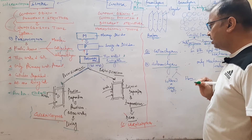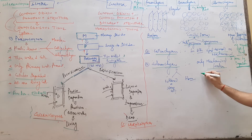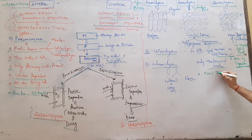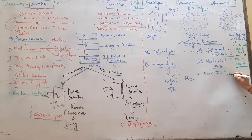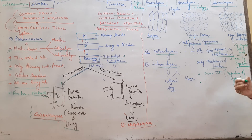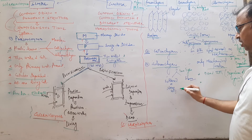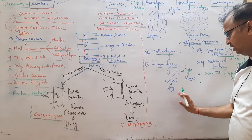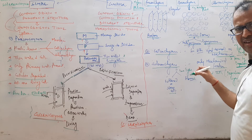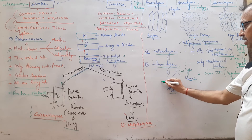Sclerenchyma has only mechanical function. All cells are dead cells due to the deposition of lignin. Sclerenchyma is further divided into two types: first is sclereids, which are hard stone cells, and second is fibers, which are highly elastic in nature with more fiber content. So sclerenchyma is divided into sclereids and fibers.